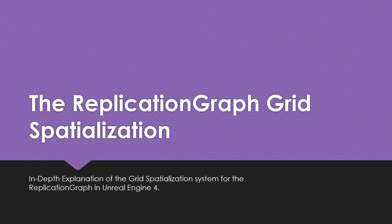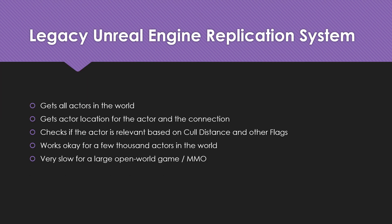In order to understand why grid spatialization is more effective at reducing load on the server, we first have to look at how the legacy system handles it. When you have to process replicated actors to determine whether or not they're relevant, it has to get all of the actors in the world, then get the location of each actor relative to the connection, and from that determine whether or not the connection is inside the cull distance of the actor.